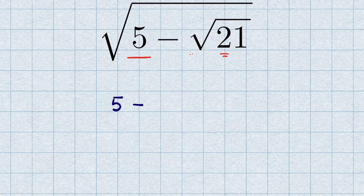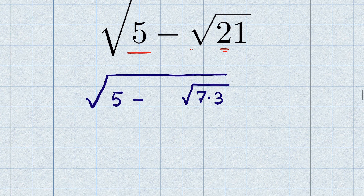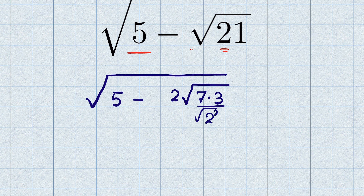Now, 5 minus √21 — we can write 21 as 7 times 3, so it becomes √(7×3) under square root. If we multiply 7×3 by 4 and divide by 4, this 4 under the root can be written as 2² under the root. We remove that square root with the square, bringing 2 outside, and then cancel the 2 with the 2.